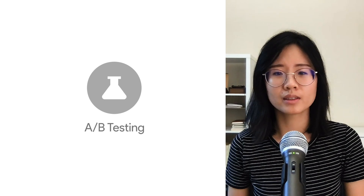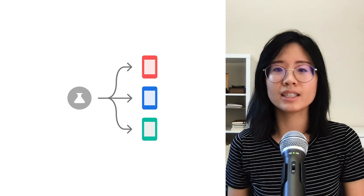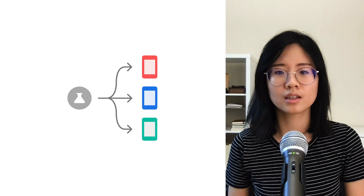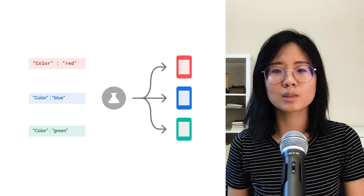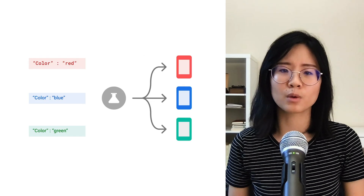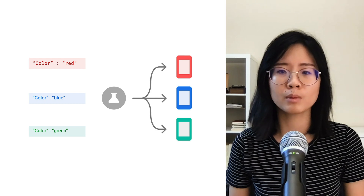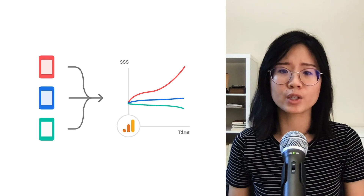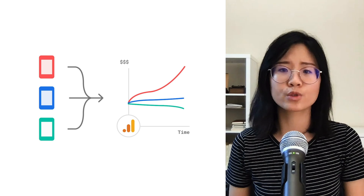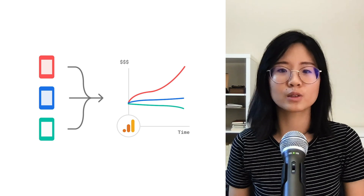Before we dive into setting up an experiment, let's talk a bit more about how the A-B testing product works. Firebase A-B testing allows you to easily test variations of your app on your users to help identify which variation is the most effective at driving the results you care about. Because it is built on top of Firebase Remote Config, very little extra setup is required — you can define your experiment variants simply by setting different values for your Remote Config parameters. A-B testing's integration with Google Analytics also means that common app metrics such as retention or revenue can be measured straight out of the box. This data is analyzed by the A-B testing pipeline to recommend the best performing variant to rollout to your users.